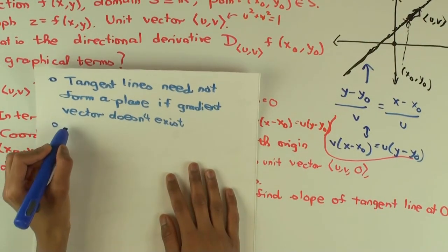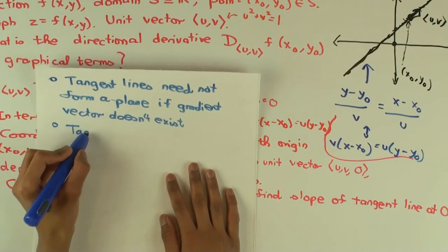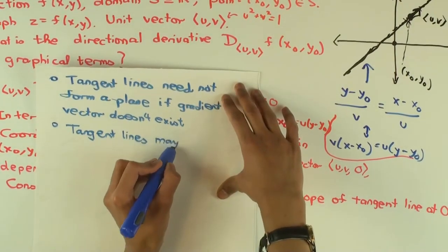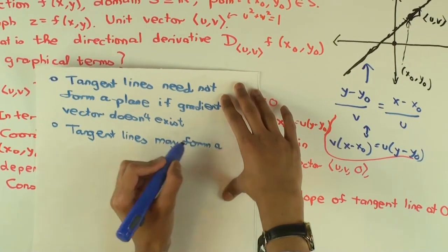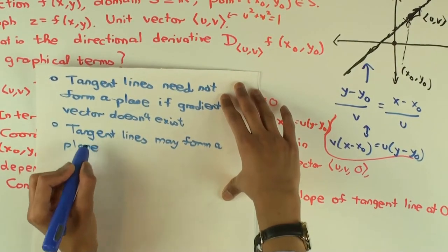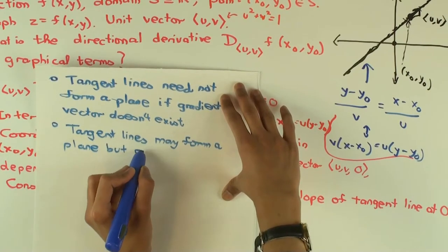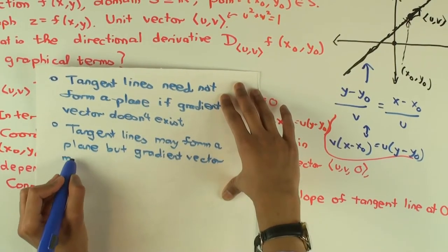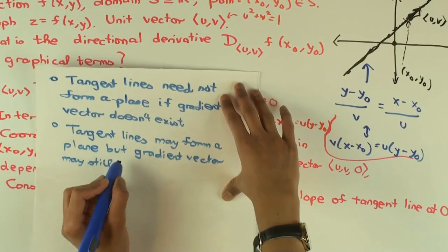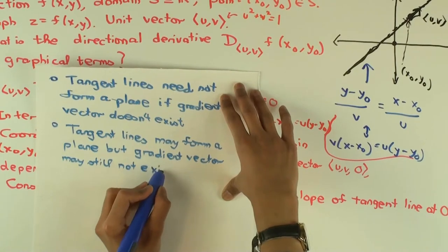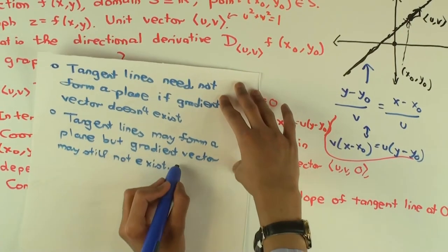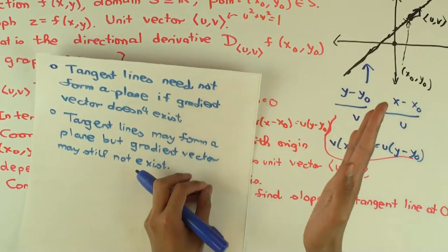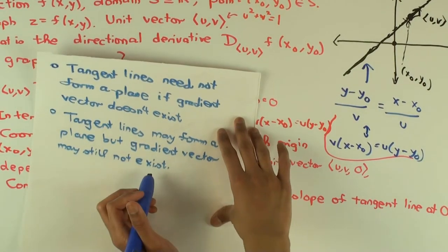So if you're not assuming differentiability, the directions really don't have to have any relation with each other. So you could sort of pictorially imagine something. The second problem is that the tangent lines may form a plane, but the gradient vector may still not exist, in which case you won't actually want to call this the tangent plane.